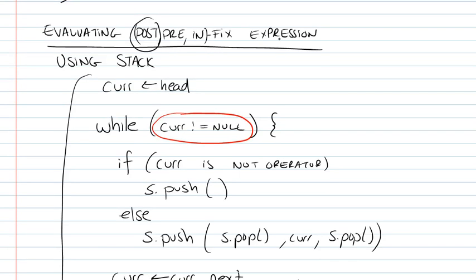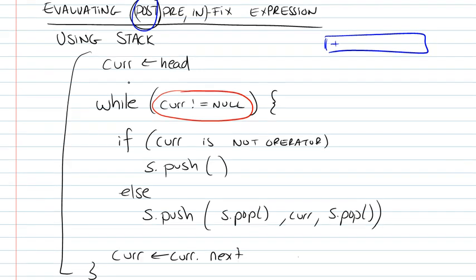And how do we evaluate an expression itself? Not a tree, but for example, if we had a postfix expression, how do we evaluate it? Well, we just step through the list, and while that pointer that you're using to step through is not null, you...